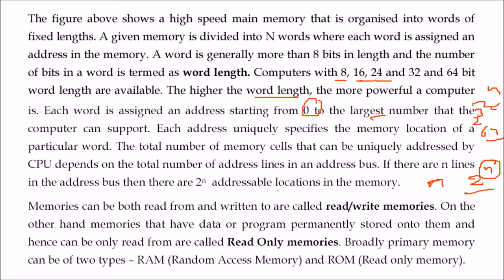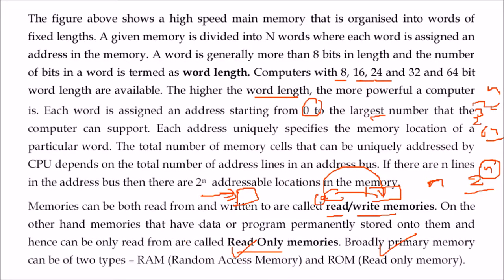There are two things you want to do with memory: get data from it (read) or replace data in it (write). Memories where you can permanently store data are called read-only memories (ROM). Memories where you can read or write data as long as power is on are called random access memory (RAM). Both RAM and ROM have various variations.